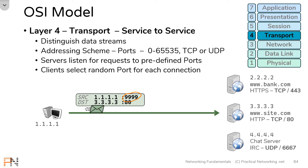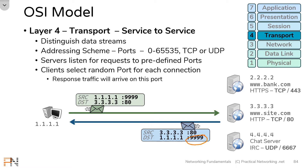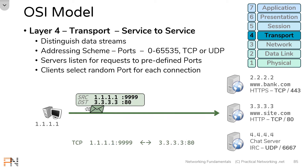This randomly selected source port is actually very important — it is the port the client will listen to for the response to the original request. When this server responds to this web request, that packet will have a destination port of 9999, the same port that was initially selected by the client randomly on the outbound initial packet. So for all connections, there is always a source port and a destination port involved. The destination port is typically governed by the application in use, and the source port is randomly selected by the client. Notice that in the initial packet this was the source and that was the destination, and in the response packet it's the exact opposite.